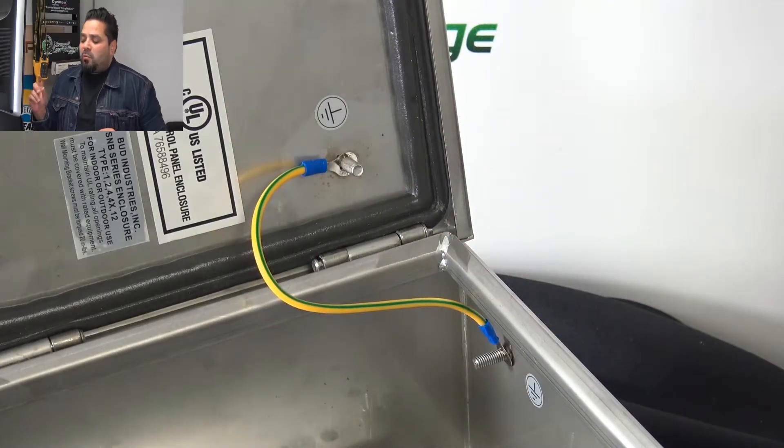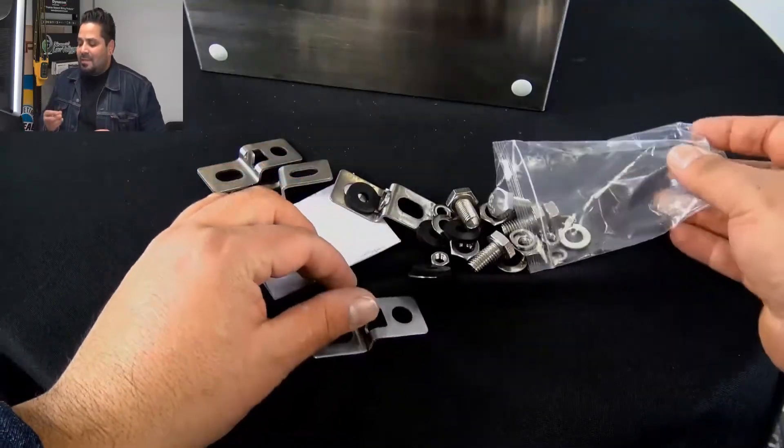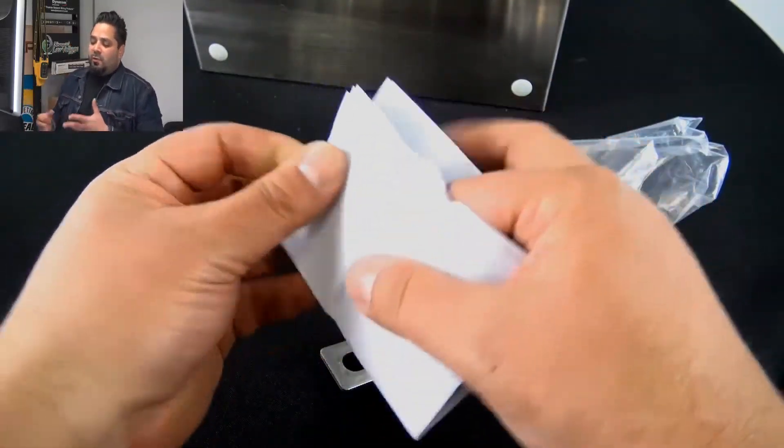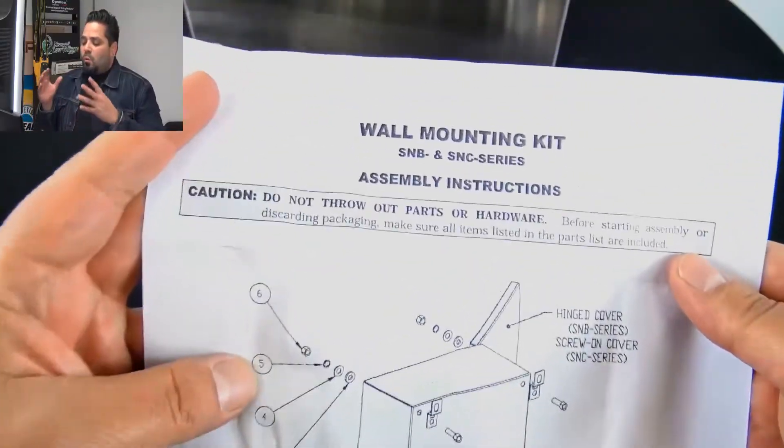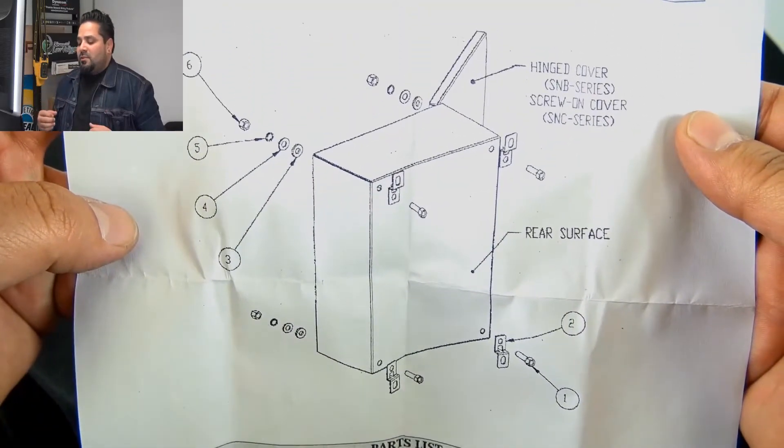Now the wall mount bracket kit, there it is. It does include the gasket, those rubberized gaskets right there, and that way you can still keep your NEMA rating. And as you can tell we opened the instructions here on the kit and it kind of gives you some pointers on how to do it and where everything goes.